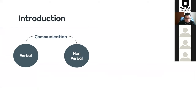Let's start talking about human communication. Communication is a process that involves the exchange of information between two or more interlocutors. When you think about human communication, we can divide it into two categories: verbal and non-verbal form.